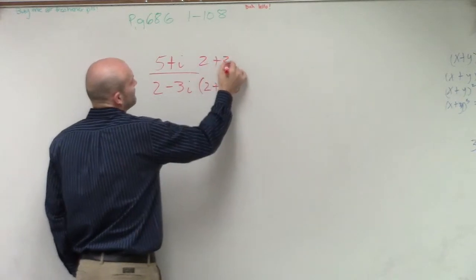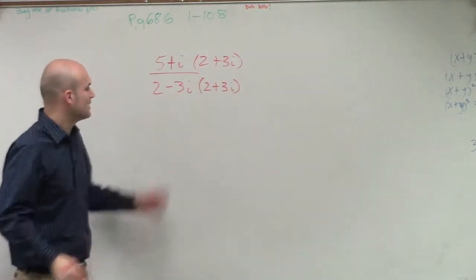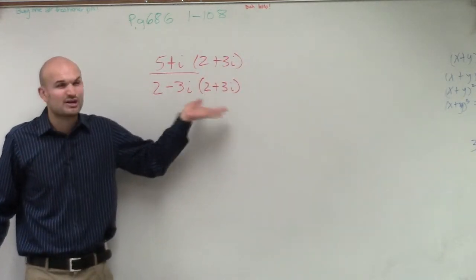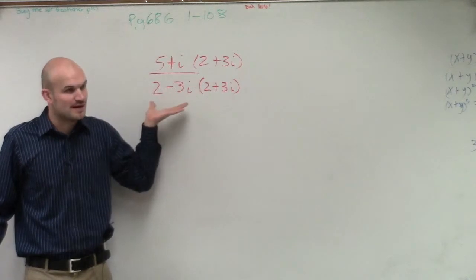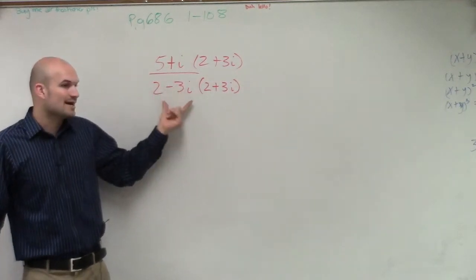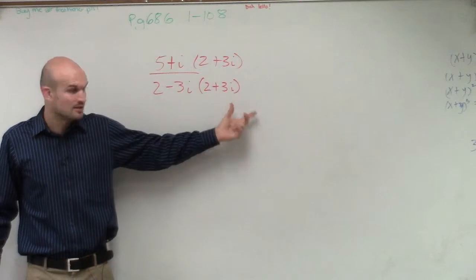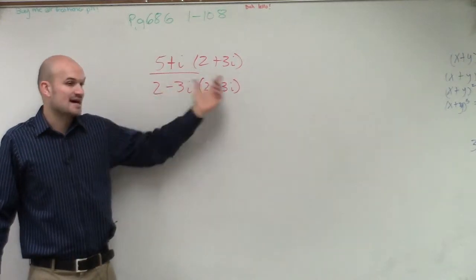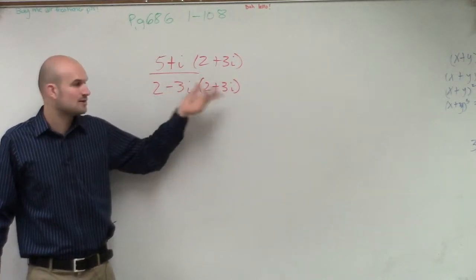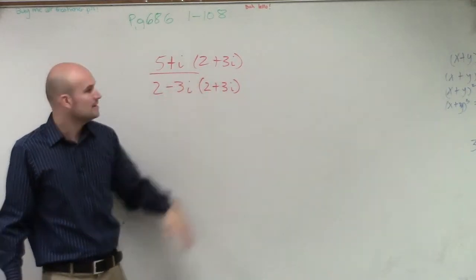We first learned about the conjugate when we were dealing with radicals — we couldn't have radicals in our denominator. When it's a binomial, you're going to want to multiply by the conjugate, which is the exact same binomial but now with the opposite sign. So instead of minus, it's now plus.